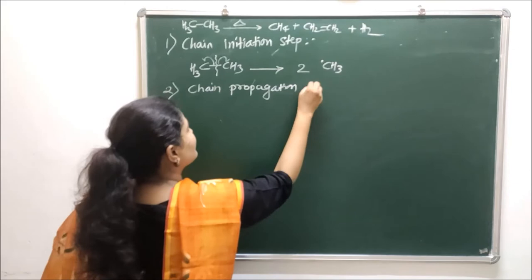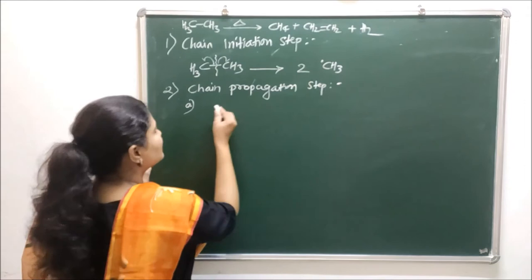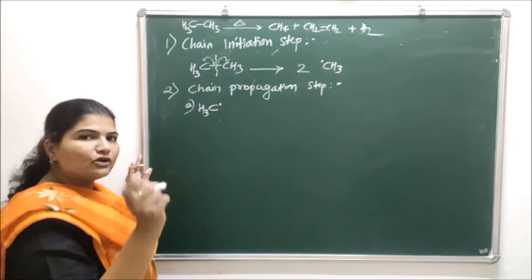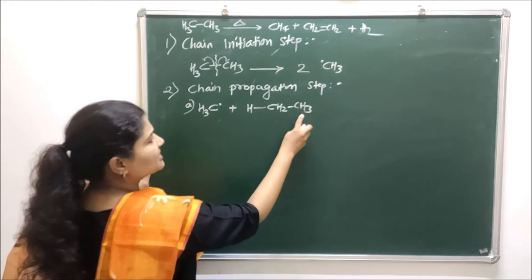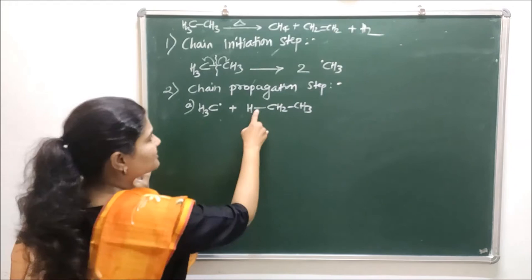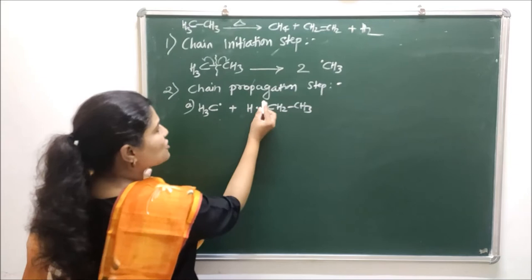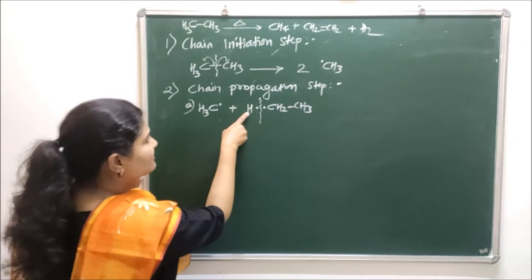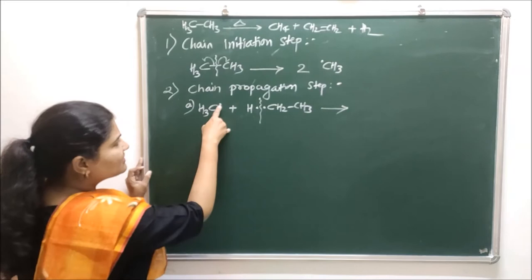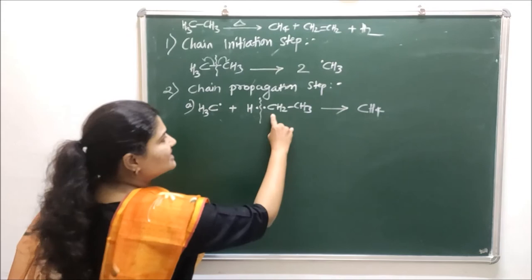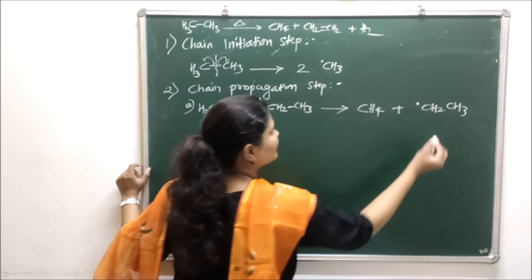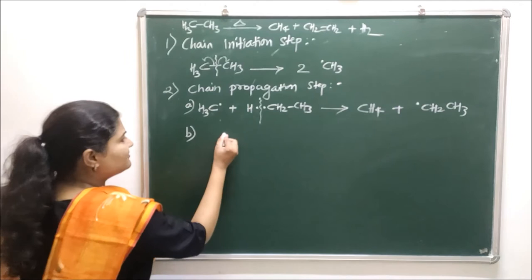In chain propagation, the methyl free radical (·CH₃) attacks the substrate molecule — ethane (H·CH₂CH₃). The C–H bond, made up of two electrons, is broken. One electron and one hydrogen go to the methyl radical, forming a methane molecule (CH₄). The remaining electron stays with the ethane fragment, producing an ethyl free radical (·CH₂CH₃).